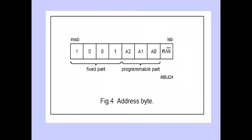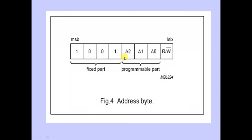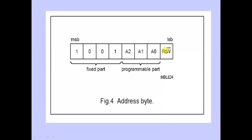Understanding the slave address is critical for communicating with this I2C device. The fixed part of the address is 1001 (equivalent to 9), followed by A2, A1, A0, which are set by your hardware connections. The last bit is the R/W bit: 0 for write operations and 1 for read operations.